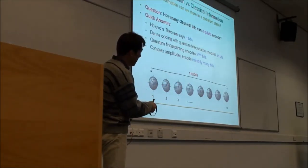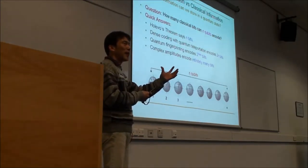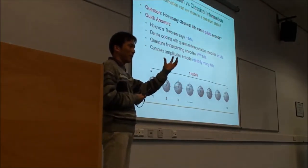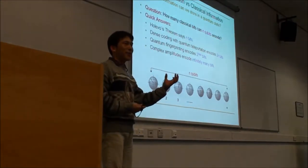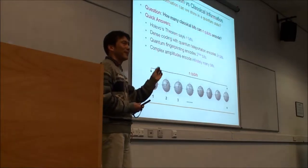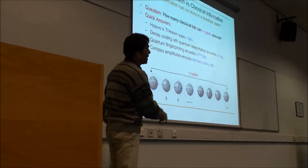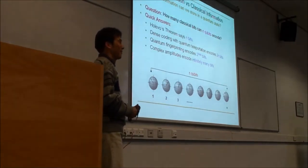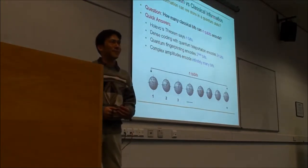If you use complex amplitudes — remember the amplitude is the coefficient — it could be any complex number, including any real number. So infinitely many bits can be encoded into a real number. One qubit can possibly represent infinitely many bits of information. That's the power of the quantum state.